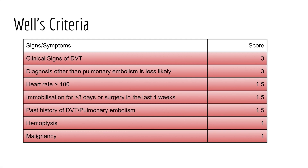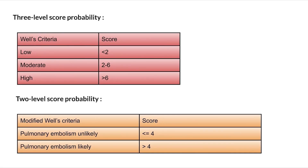Any of these signs and symptoms present are given a score accordingly, then a total score is calculated and the risk is determined. There are two levels of scoring: three-level score probability and two-level score probability. In the three-level score probability, a score less than 2 is low, 2 to 6 is moderate, and more than 6 is high risk.